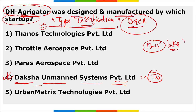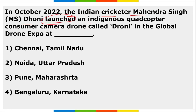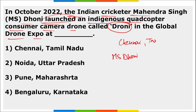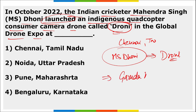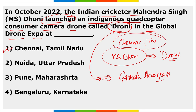Indian cricketer MS Dhoni launched an indigenous quad-copter consumer camera drone called 'Droni' at the Global Drone Expo held in Chennai, Tamil Nadu. This drone is associated with Garuda Aerospace, and MS Dhoni has been appointed as their brand ambassador. The 44th edition of the FIDE Chess Olympiad was also held in Chennai, and Chennai launched its first ambulance for street animals.